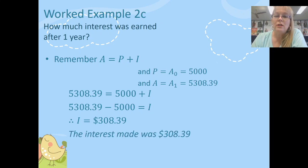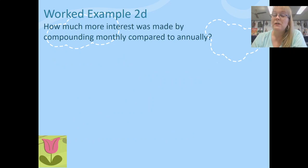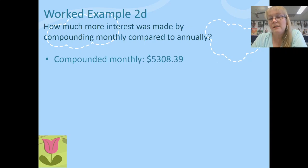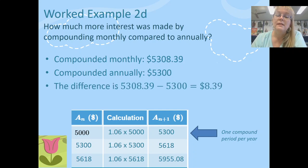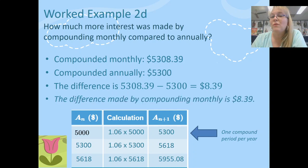Now the last part of this question wants me to work out what the difference is between compounding annually and compounding monthly. Well, compounding monthly, my amount at the end after that period of time was $5,308.39. And remember, we did that table all the way back at the beginning and we found that the amount at the end of one year was $5,300 when we compounded it annually. So the difference between the two is going to be $8.39. So we're basically making an extra $8 interest by compounding monthly instead of compounding annually. It doesn't sound like a lot, but it all depends on what the interest rate is and how much you invest to start with. So we also need to write a statement for that.